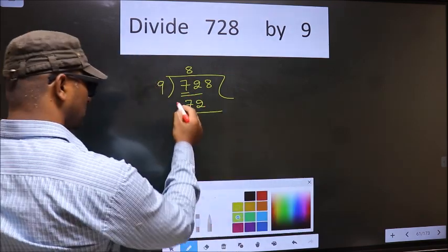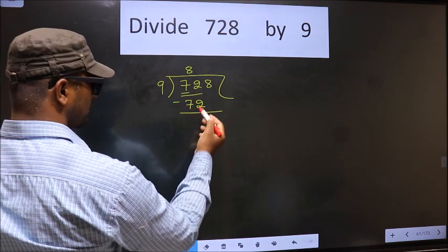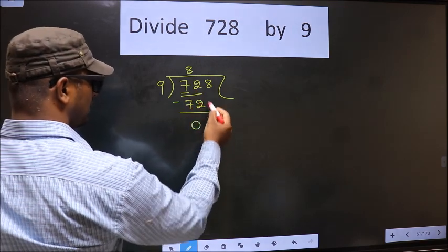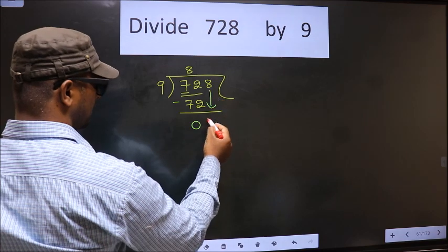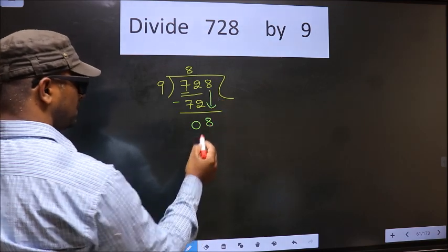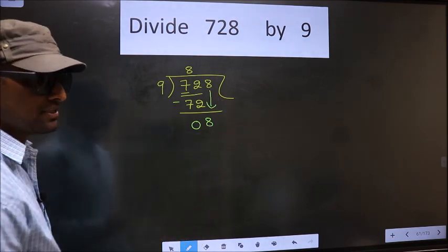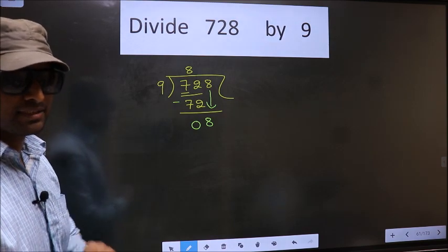Now, you subtract. 72 minus 72 is 0. Now, you bring down the beside number, that is 8. This is where the mistake happens, and the mistake is this.